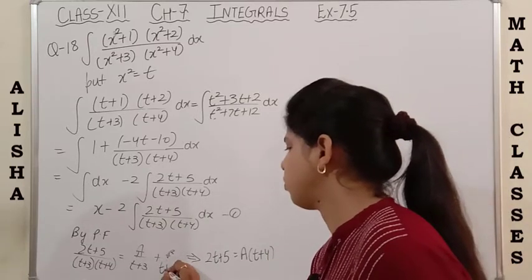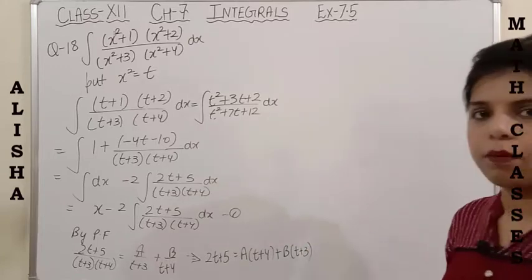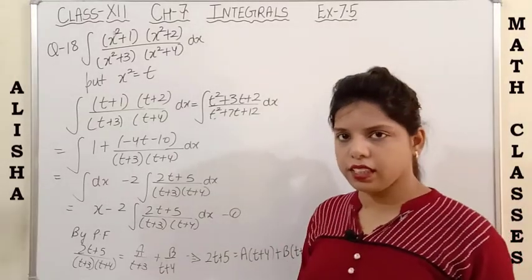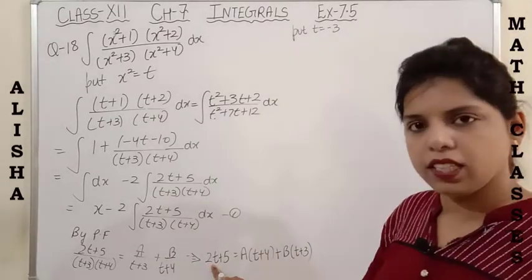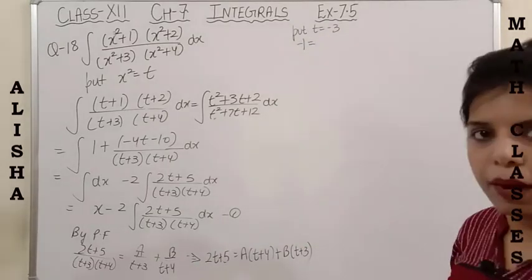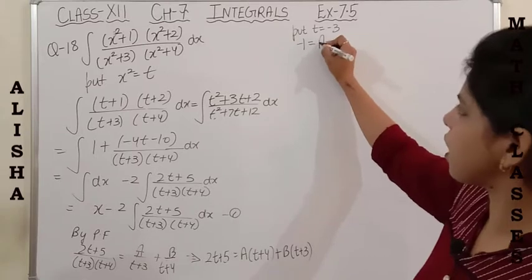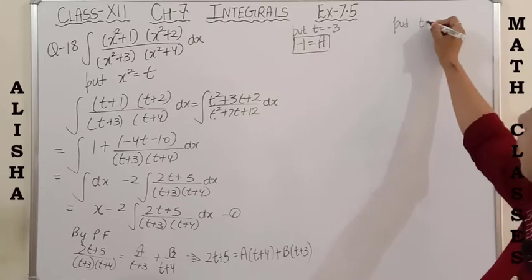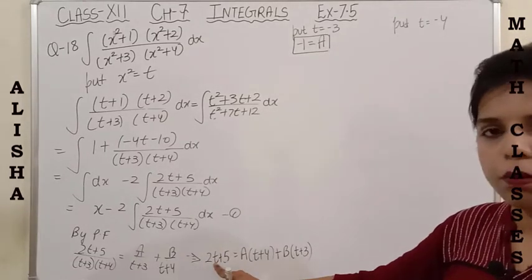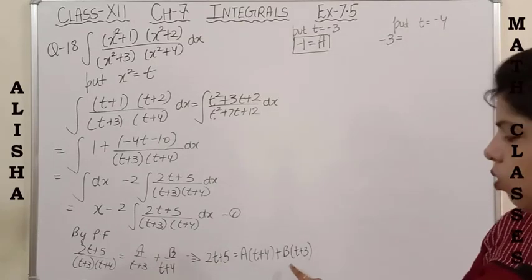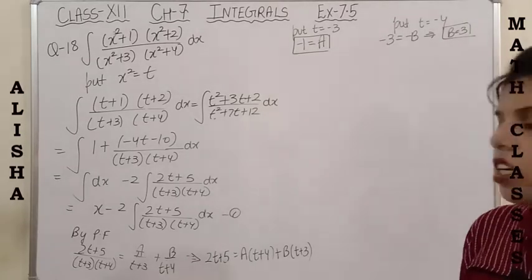I have done the cross multiplication. Now putting t+3=0, so t=−3: the left-hand side becomes 2(−3)+5 = −1, and on the right side (−3+4)=1, so A = −1. Similarly, putting t+4=0, so t=−4: the left-hand side becomes 2(−4)+5 = −3, and (−4+3) = −1, so −3 = −B, giving B = 3.